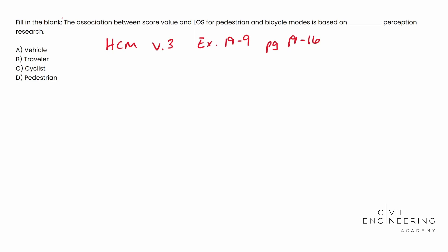The association between the score value and LOS is based on traveler perception research. So there's your answer right there. I'm going to continue on through the rest of the paragraph here. Travelers were asked to rate the quality of service associated with a specific trip through the signalized intersection. The letter A was used to represent the best quality of service and the letter F was used to represent the worst quality of service. Best and worst were left undefined, allowing respondents to identify the best and worst conditions on the basis of their traveling experience and perception of service quality.